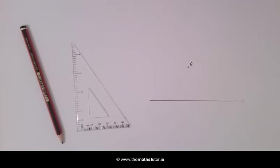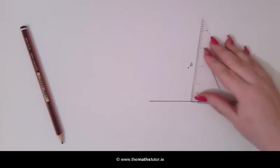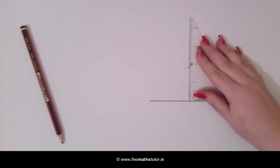In the second method, we are going to use a set square. The first thing we do is draw a line perpendicular passing through A.